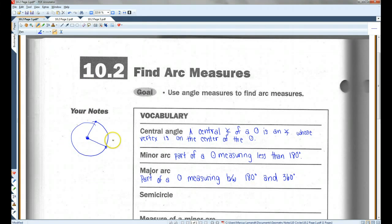Now, any time you have a central angle, you're going to create a minor arc and a major arc. Let me change colors. This is a minor arc. A minor arc is part of a circle that measures less than 180 degrees. Remember, 180 degrees is a straight line, so anything less than 180 is a minor arc.